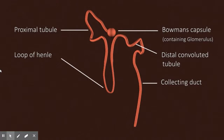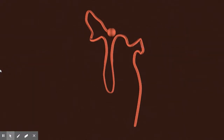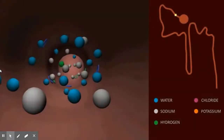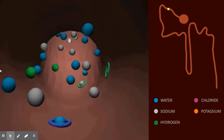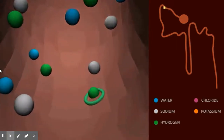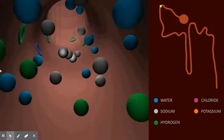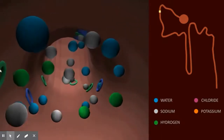Each tubule divides into the proximal tubule, the descending limb of Henle's loop, the ascending limb of Henle's loop, the distal convoluted tubule, and the collecting duct. We will now look at the transport of sodium and water in each region by travelling through the nephron. The proximal tubule initiates at the Bowman's capsule. 65% of filtrate moves from the proximal tubule back into the blood — this process is called reabsorption.